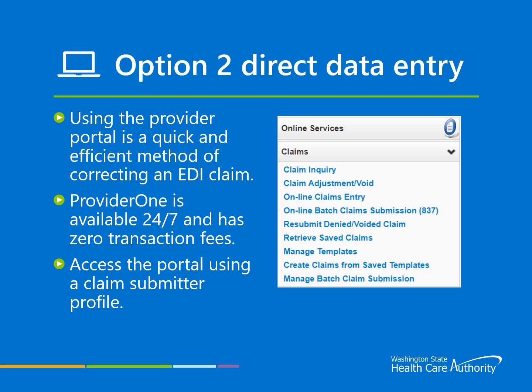The second option and the topic we will focus on in the next several slides will be correcting your claim using the Provider One portal. You will need to use a claim submitter profile to access the claims section of the portal. Using the Provider Portal is a quick and efficient method of correcting an EDI claim. Provider One is available 24 hours a day, 7 days a week and has zero transaction fees.